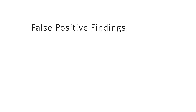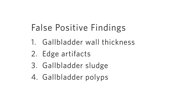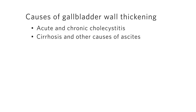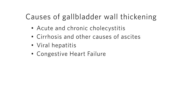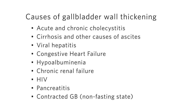Some common pitfalls to watch out for when imaging the gallbladder include false positive findings due to gallbladder wall thickness, edge artifacts, gallbladder sludge, and gallbladder polyps. Gallbladder wall thickness can be increased in the following states: acute and chronic cholecystitis, but also cirrhosis and other causes of ascites, viral hepatitis, congestive heart failure, hypoalbuminemia, chronic renal failure, HIV, pancreatitis, and a contracted gallbladder, such as in a non-fasting state.